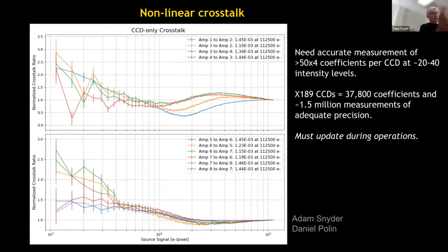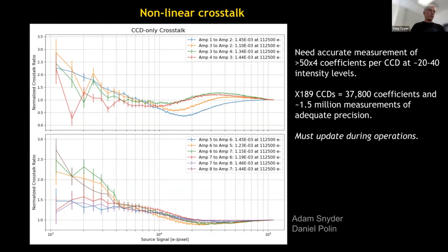You have to measure these functions if you believe they're reproducible — maybe four coefficients for a polynomial fit, multiplied times 50, and then measured at about 20 to 40 different intensity levels. Then you multiply all that times 189 for the number of CCDs, and you get about 3,800 crosstalk coefficients, which is about one and a half million measurements. You have to do these measurements to adequate precision so that you can subtract the crosstalk down to the level where it doesn't affect your science, and you have to update this continuously during observations.